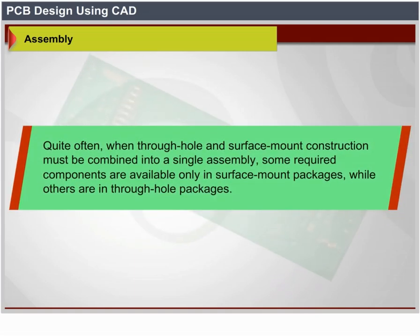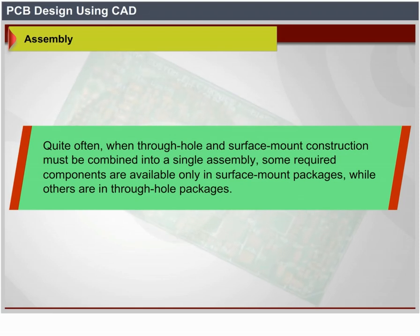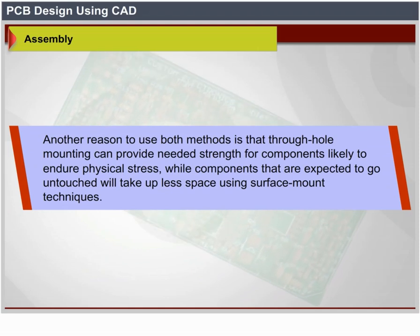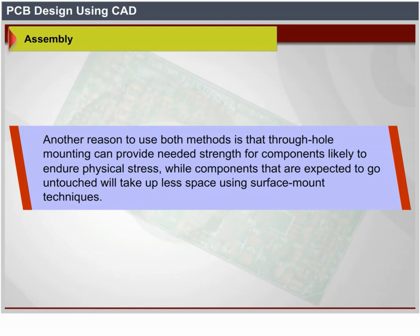Often through-hole and surface mount constructions must be combined in a single assembly because some required components are available only in surface mount packages while others are available only in through-hole packages. Another reason to use both methods is that through-hole mounting can provide needed strength for components likely to endure physical stress, while components expected to go untouched take less space using surface mount techniques.